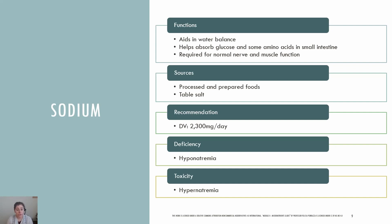If an individual is exercising strenuously and consuming excessive amounts of water without replacing electrolytes, this can dilute sodium in the blood, leading to hyponatremia, or low blood sodium concentrations. As a result, the cells swell with water and can burst if the imbalance is severe and prolonged. With an individual who is excessively exercising without consuming adequate amounts of fluid, they can become dehydrated and hypernatremia can occur, which is elevated blood sodium levels. The high concentration of sodium in the extracellular fluid causes water to leave cells by osmosis, making them shrink. Another concern with elevated sodium intake is a risk factor for hypertension.